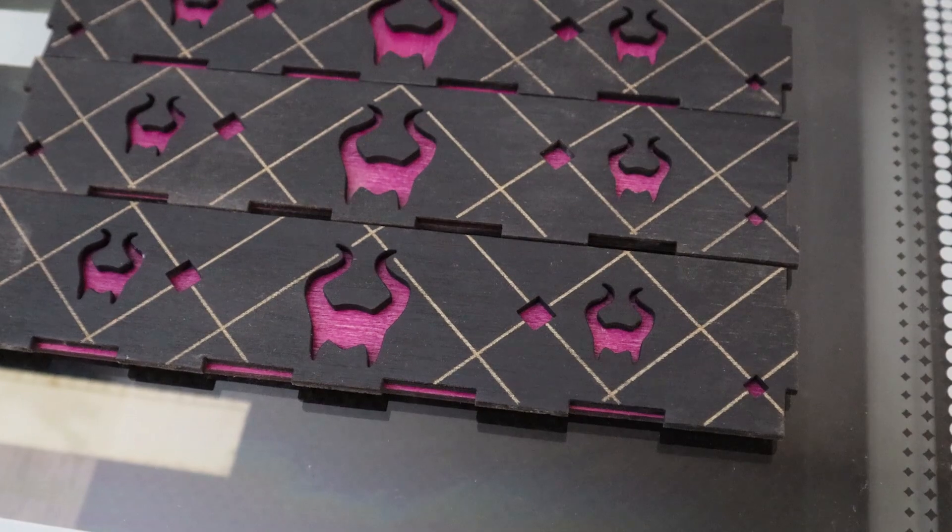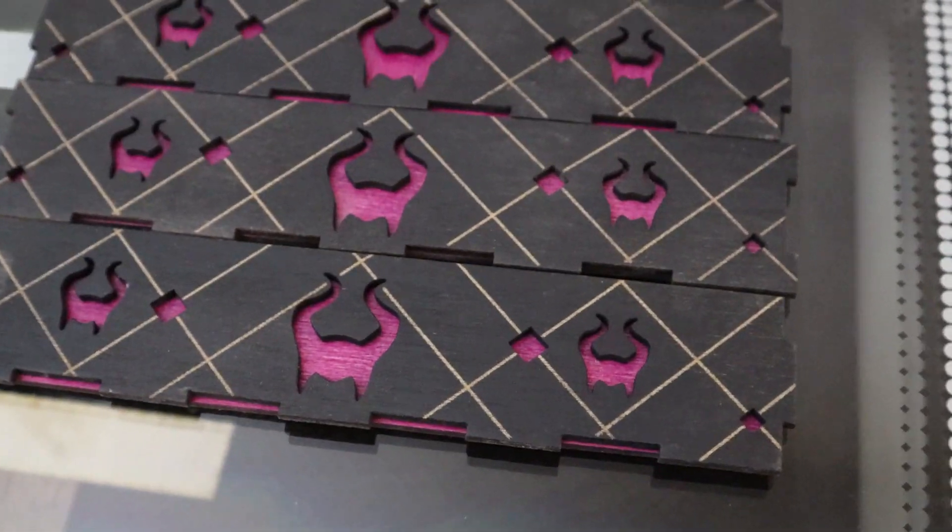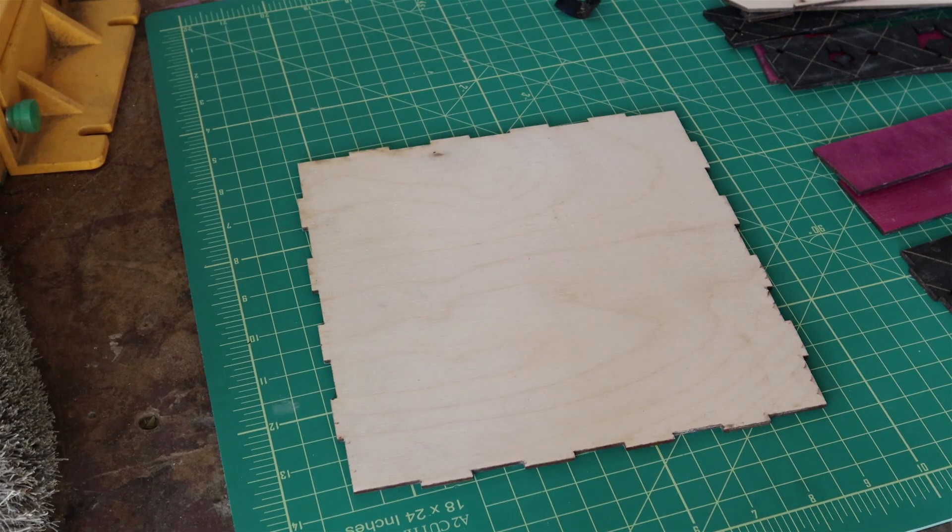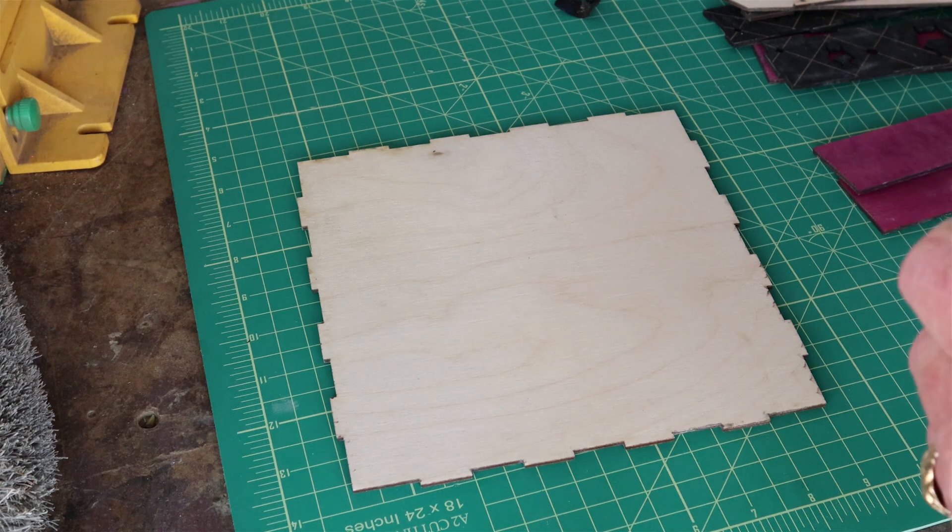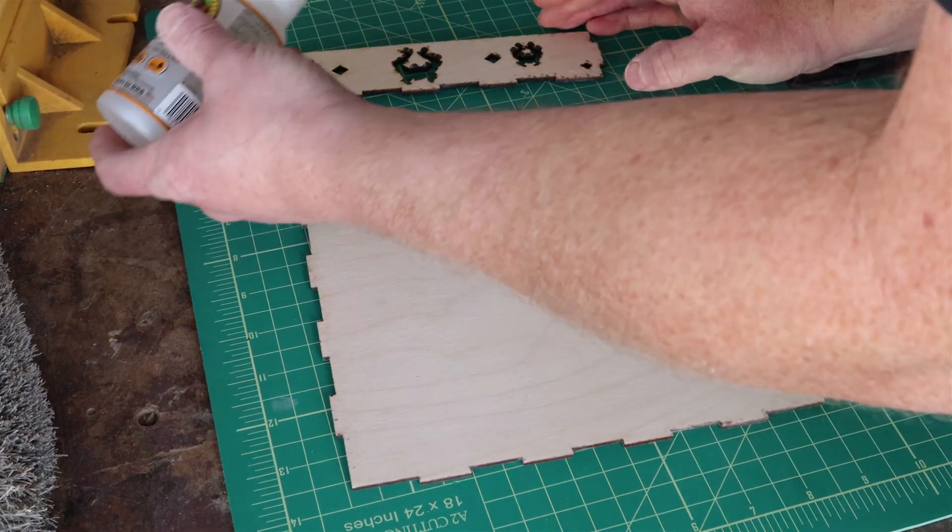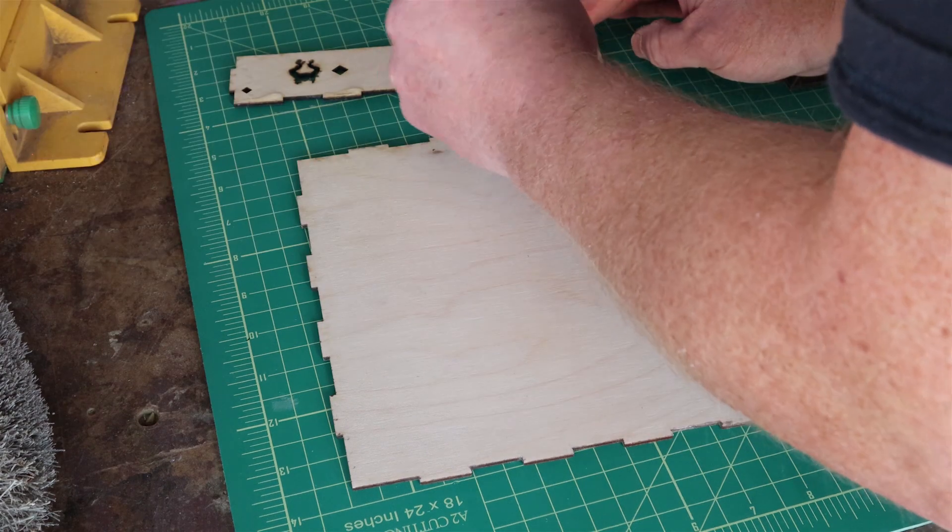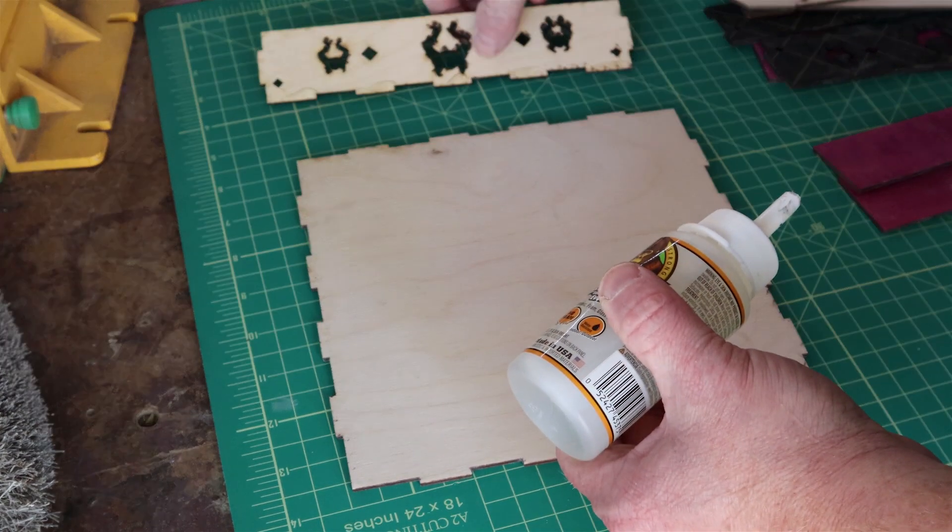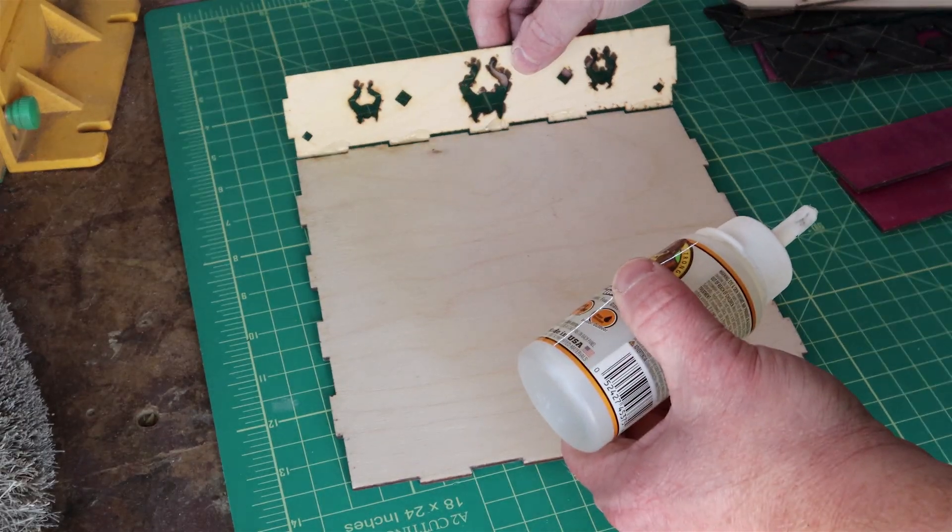With the engraving and the painting done, I'm going to go ahead and assemble the core of the box. The glue I'm using for this is this white clear Gorilla Glue. I found with the cauterized ends of the plywood from the laser that this glue holds a lot better than traditional wood glue.